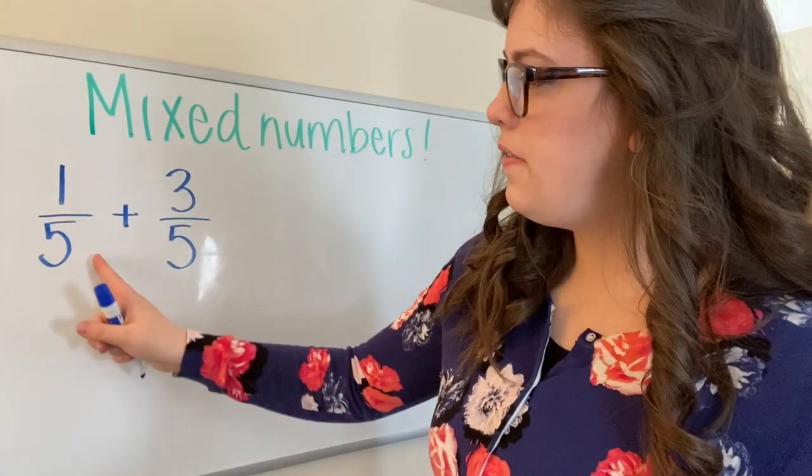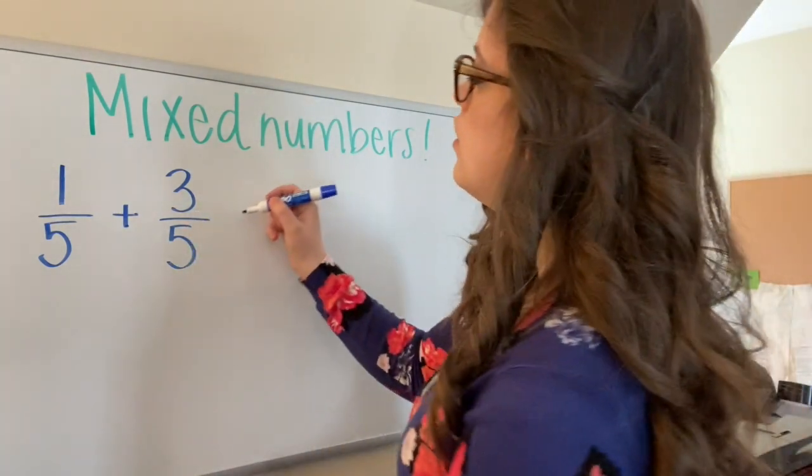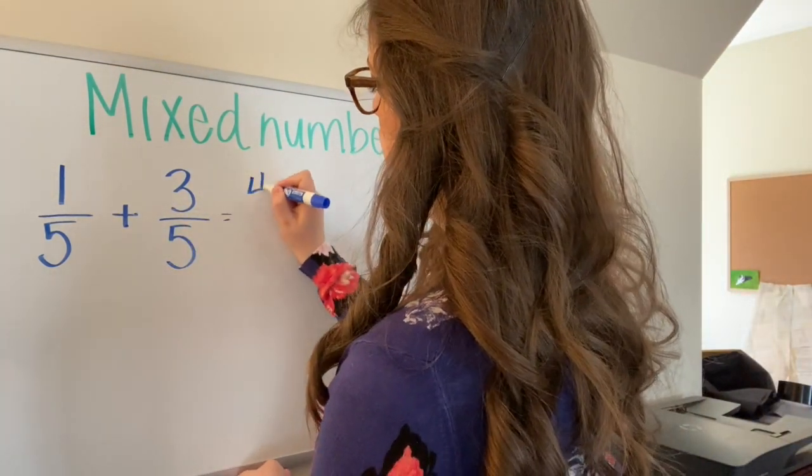So we know from our last couple of days, if I add one fifth plus three fifths, that's going to give me four fifths.